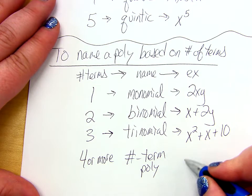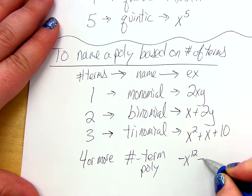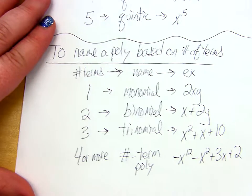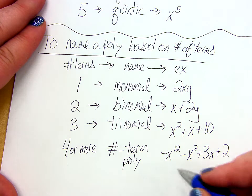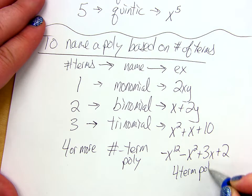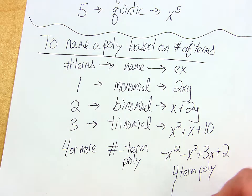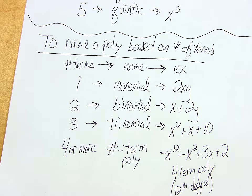So for example, if I gave you, oh, I don't know, negative x to the 12 minus x squared plus 3x plus 2. How many terms is that? Four. That would be a four-term polynomial. By the way, degree, we only went up to five, so this would be of degree 12, right? So then if it's past five, you just say 12th degree. Four-term poly, 12th degree if I asked you. I don't know the name of it. I would just call it 10,000th degree. So, which one are we out of here? Three more minutes? Yeah, we've got two more minutes.